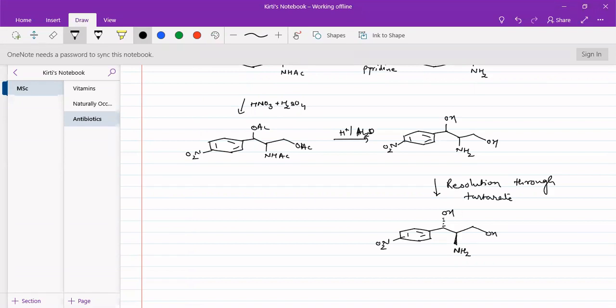Now what we want is dichloroacetyl chloride. Dichloroacetyl chloride can be added to give us chloramphenicol.